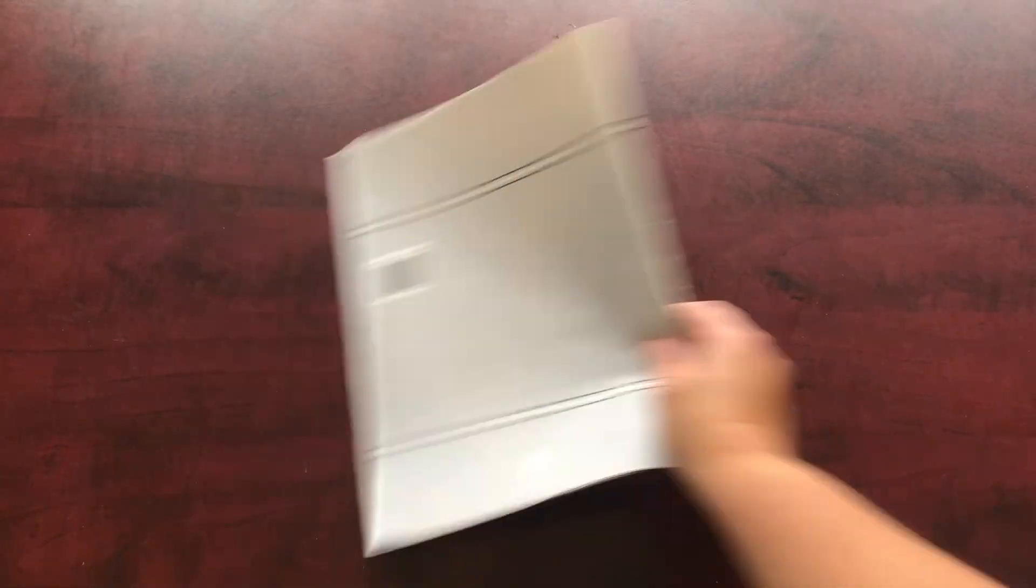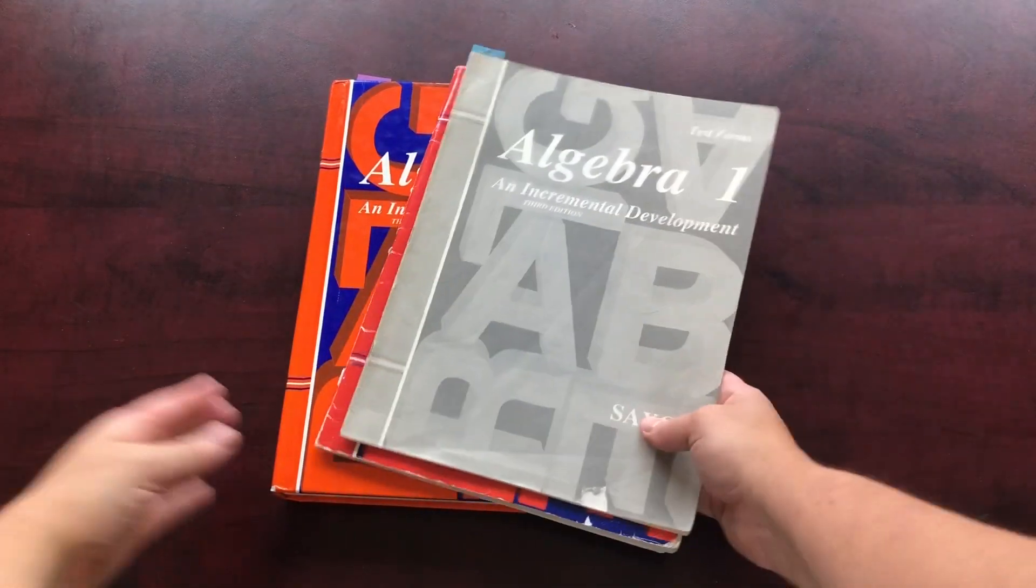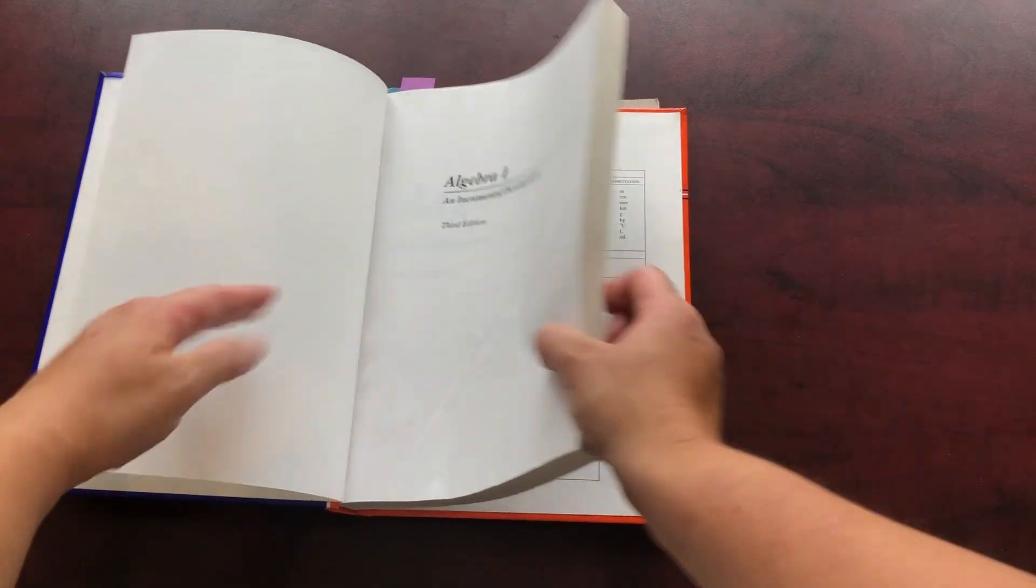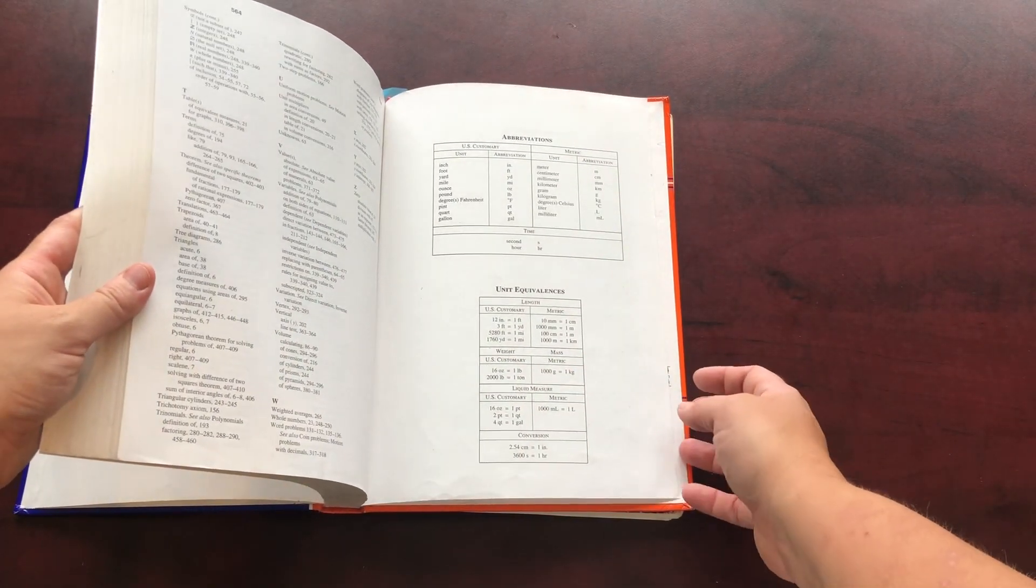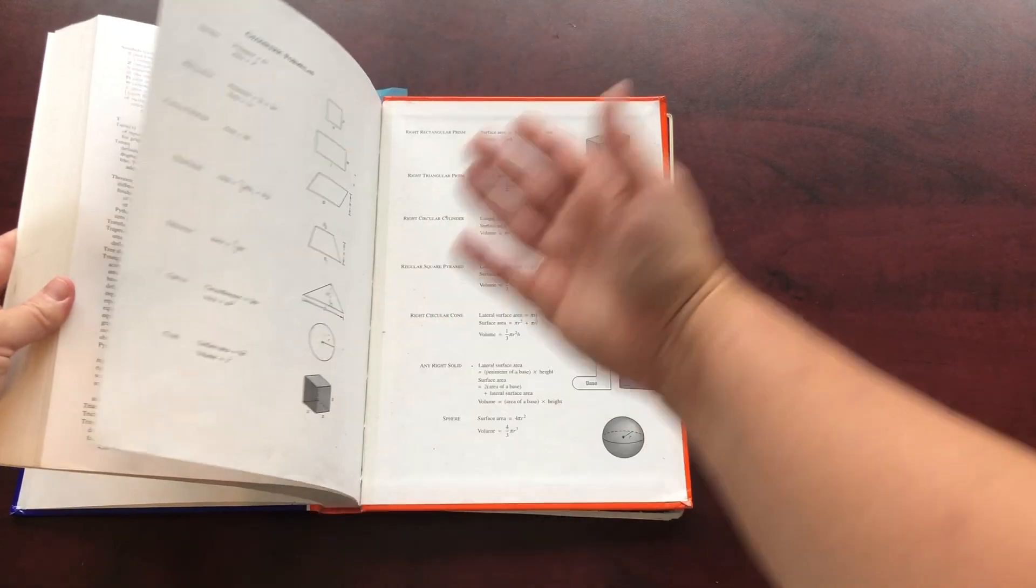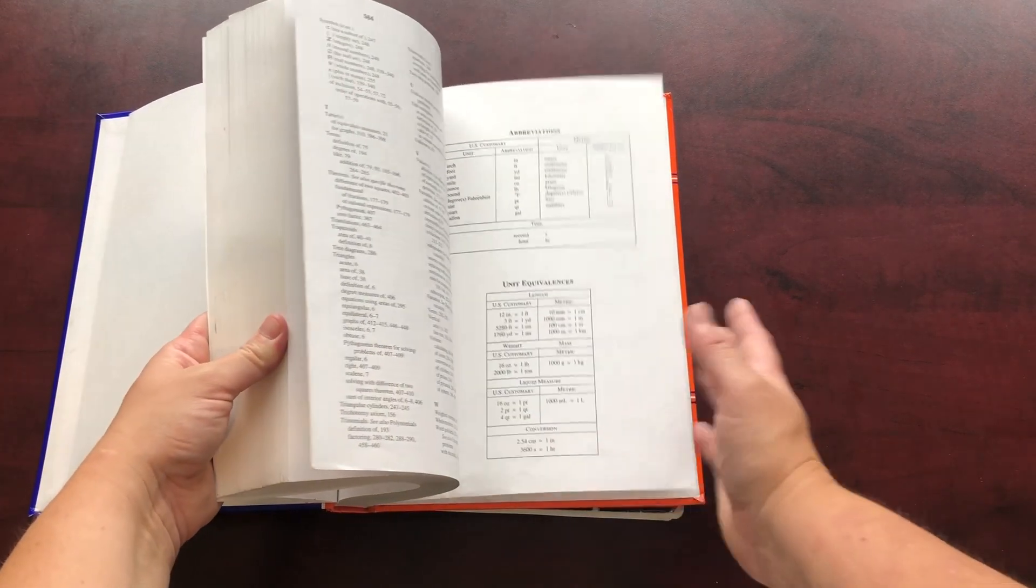So then moving on. So I have Saxon Algebra 1 here, very similar. There's the textbook. It's a little bit thicker. Let's see. How many pages is this one? 565. It does have abbreviations, unit equivalencies, as well as geometric formulas in the back. It's set up the same way.